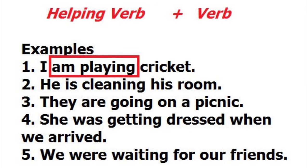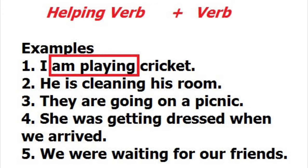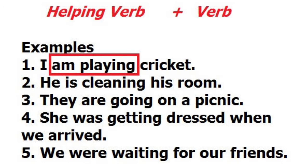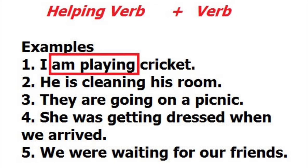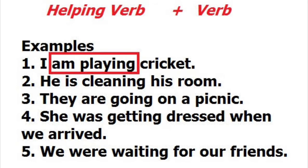These auxiliary and helping verbs help us a lot to know about the action — whether it is happening in the present or whether it happened in the past. The first three sentences belong to present tense, but the fourth sentence shows a past action: 'She was getting dressed when we arrived.' Similarly, 'We were waiting for our friends' also shows a past action.